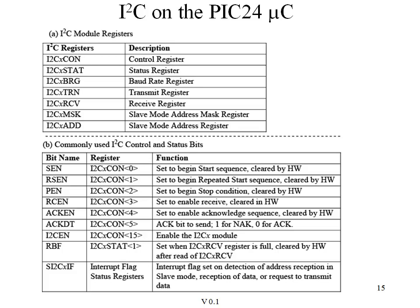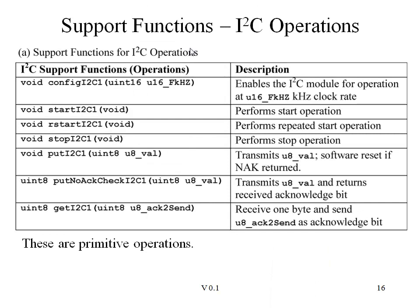As usual, the I2C protocol on the PIC24 microcontroller is implemented in hardware, and a number of control and status registers allow the user to write code which implements the I2C protocol on the PIC. What we'll focus on today is the use of some slightly higher-level functions — for example, to begin an I2C transaction with a start and end it with a stop. During a transaction, we'll find it useful to put data or get data eight bits at a time on the bus.